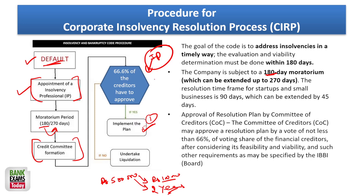If 66.6% — two-thirds — of the creditors in terms of value (not in terms of number) approve the plan, it gets implemented. Note: voting is by value of the loan given, not by headcount. This question has been asked multiple times. It used to be 75% (three-fourths) of creditors required, but it has been reduced to two-thirds (66.6%). If creditors say no, then liquidation is undertaken. This is the simple CIRP process.